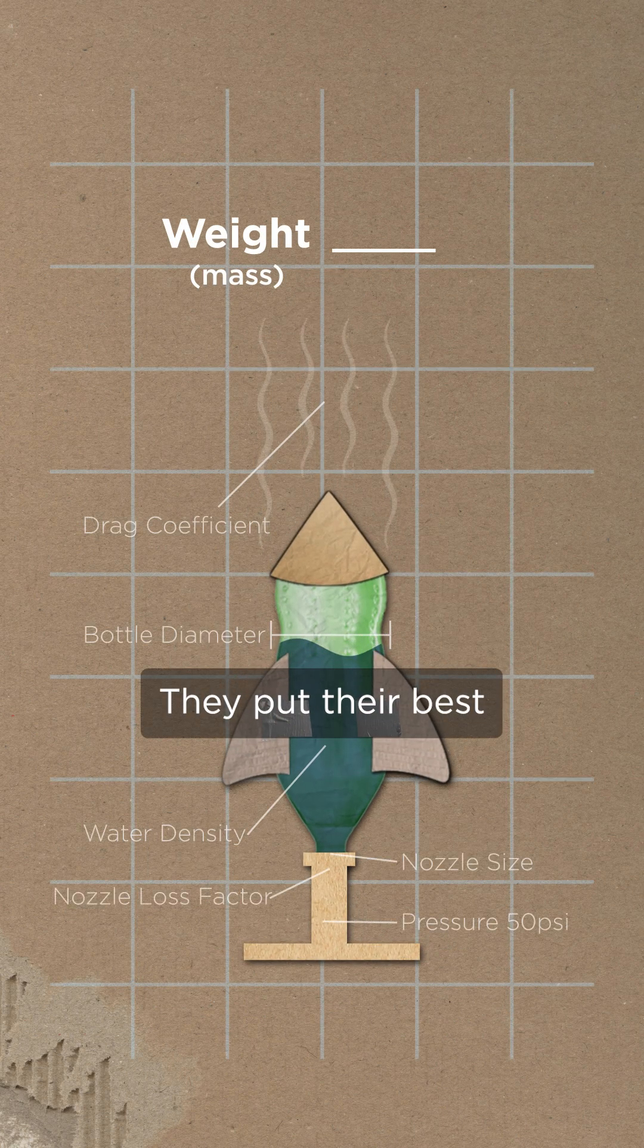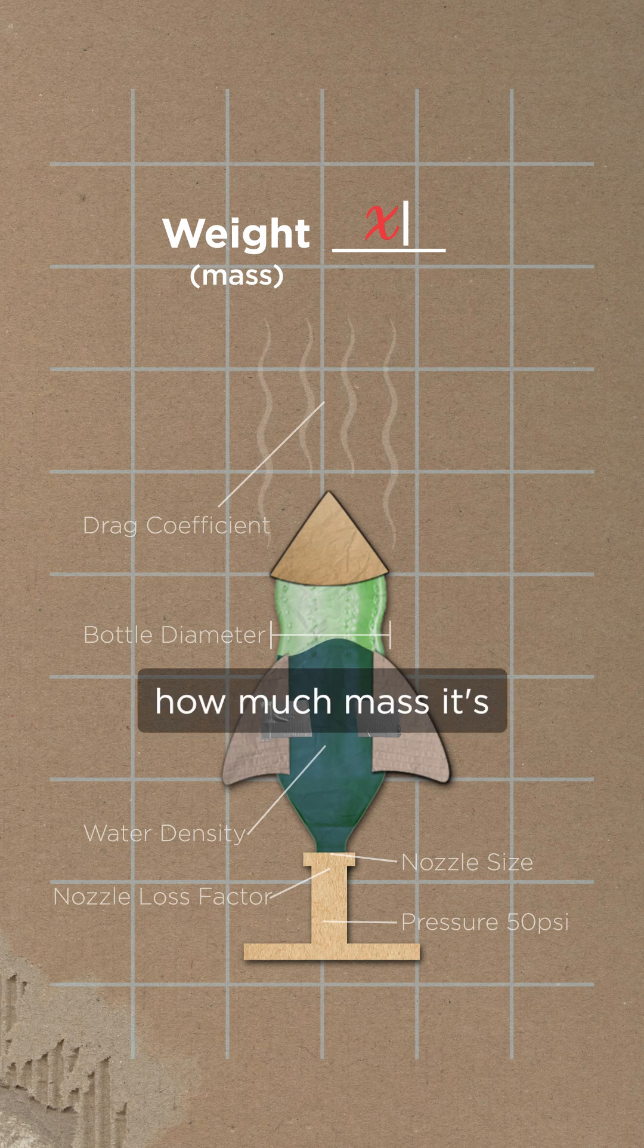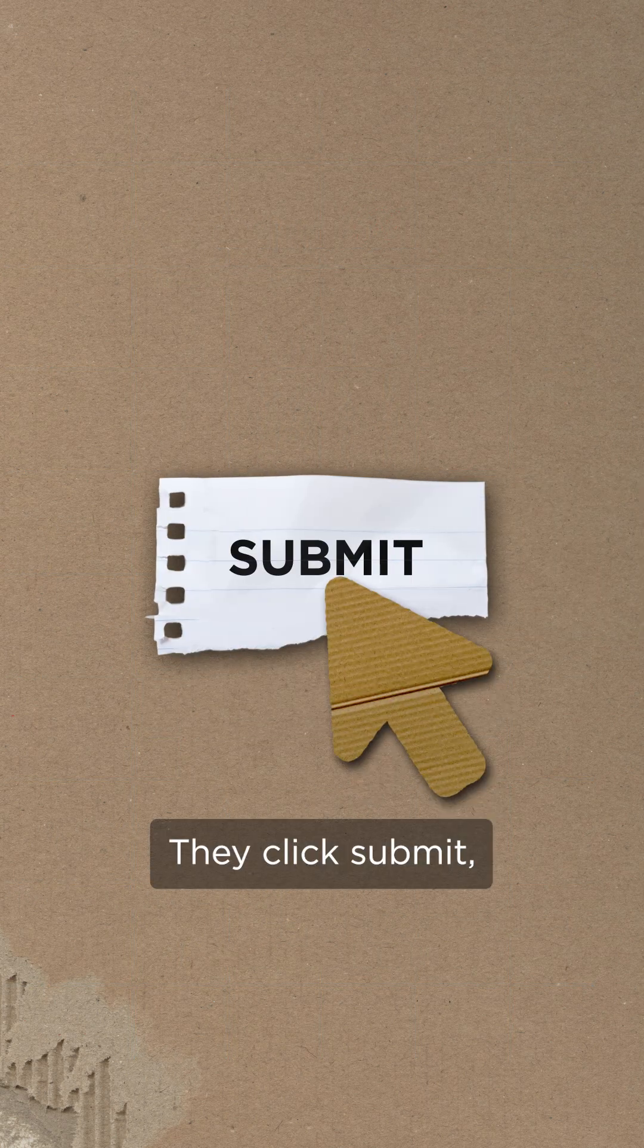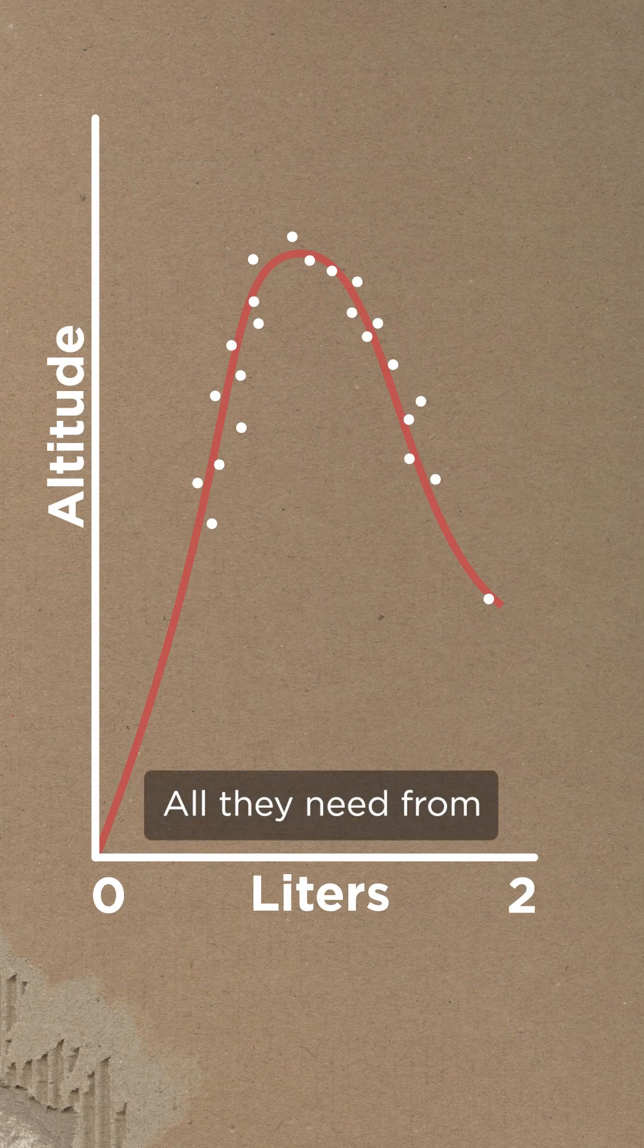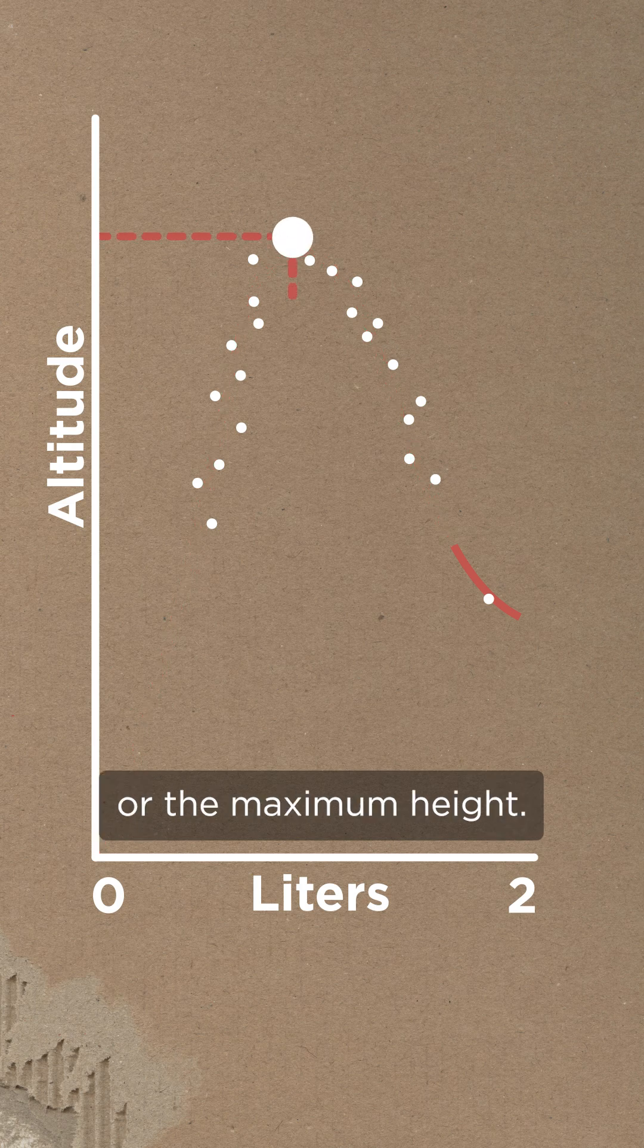They put their best guess of how much they think it's going to weigh, how much mass it's going to have. They click submit, and then they get all this cool data. All they need from this is the apogee or the maximum height.